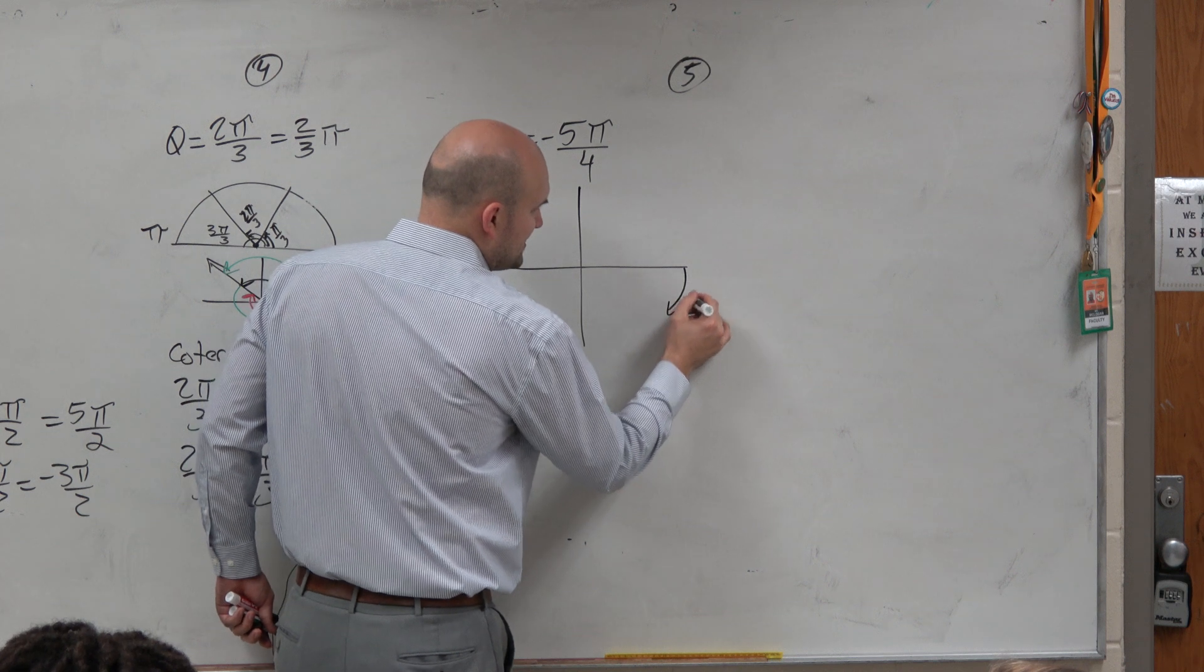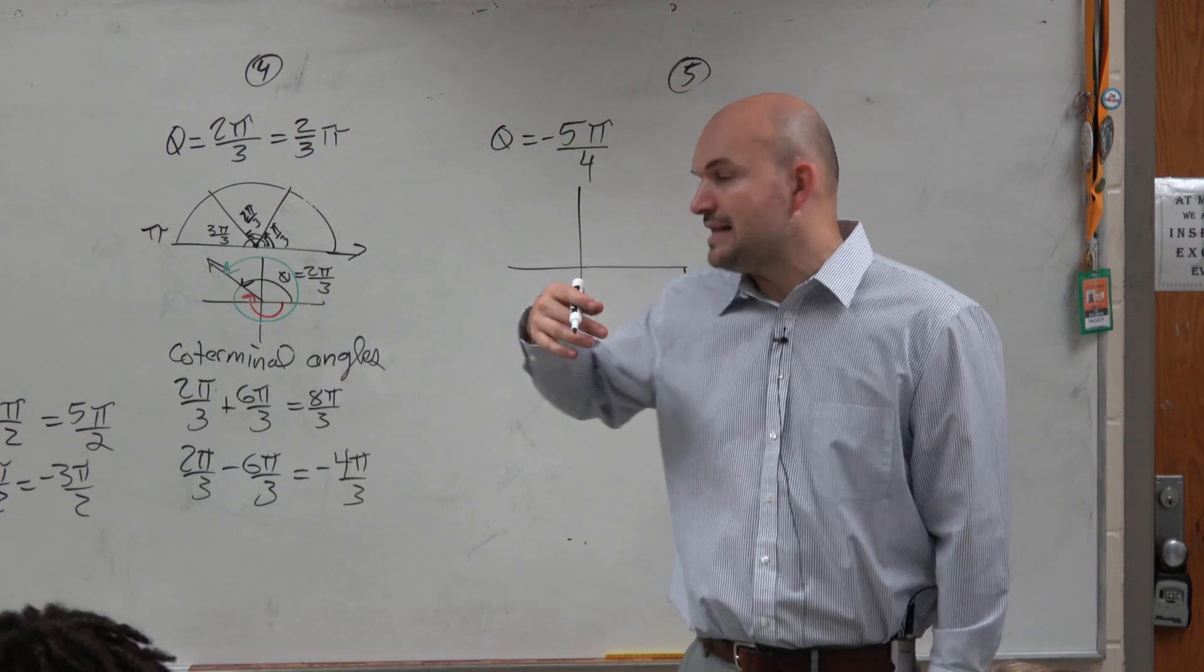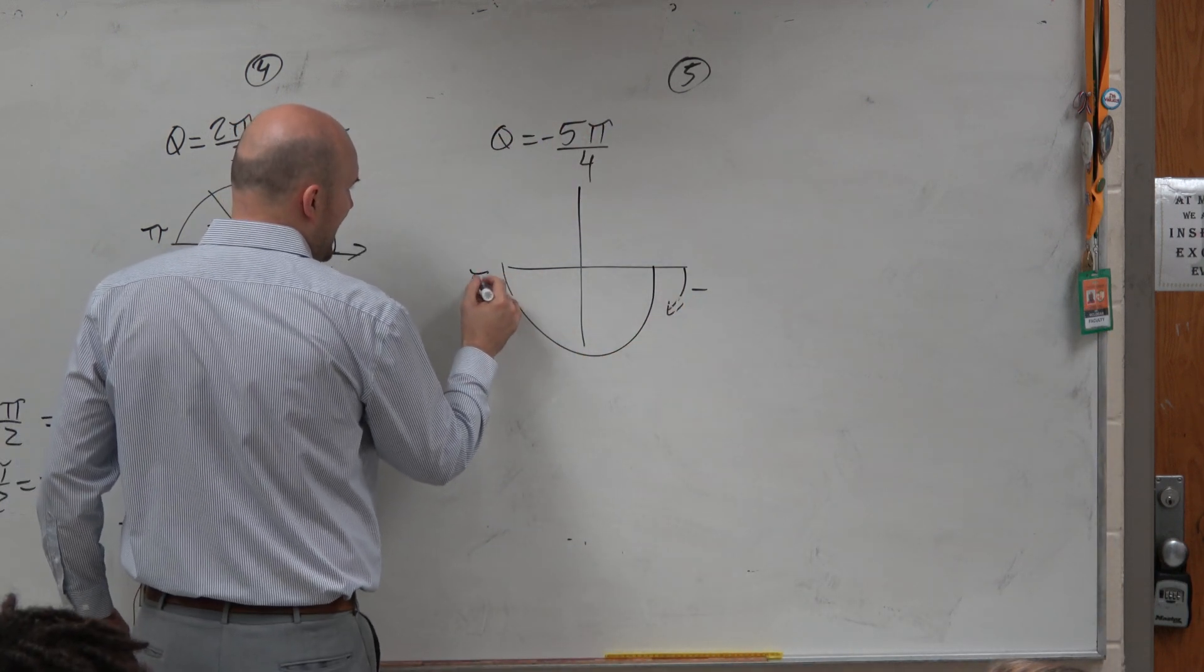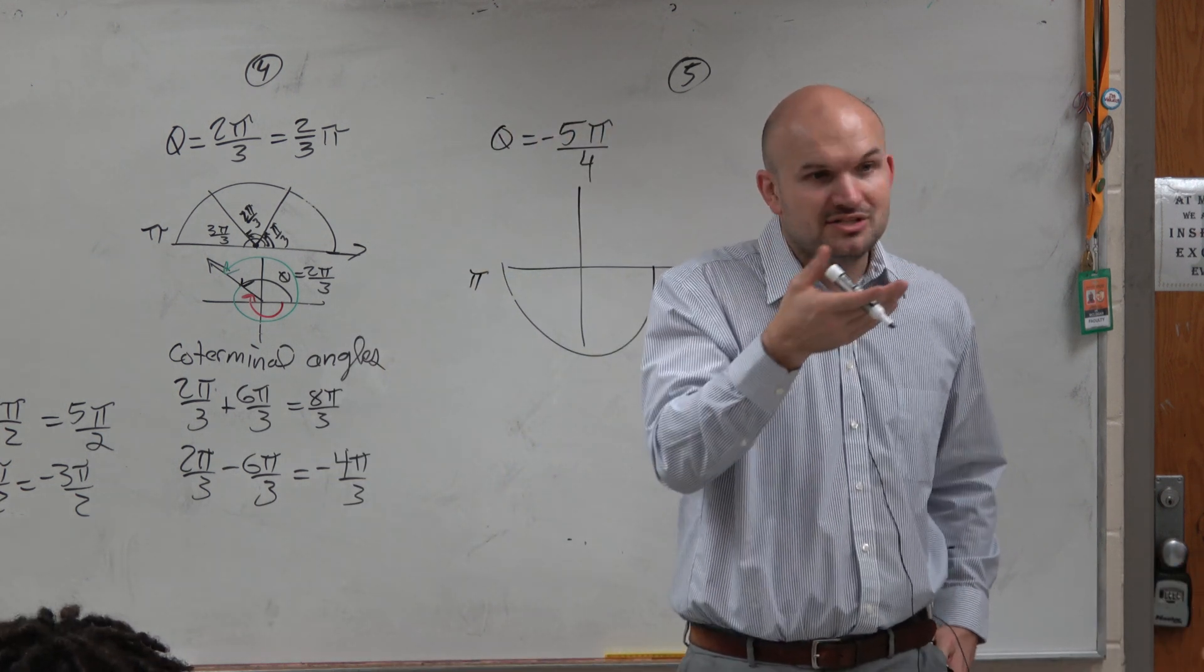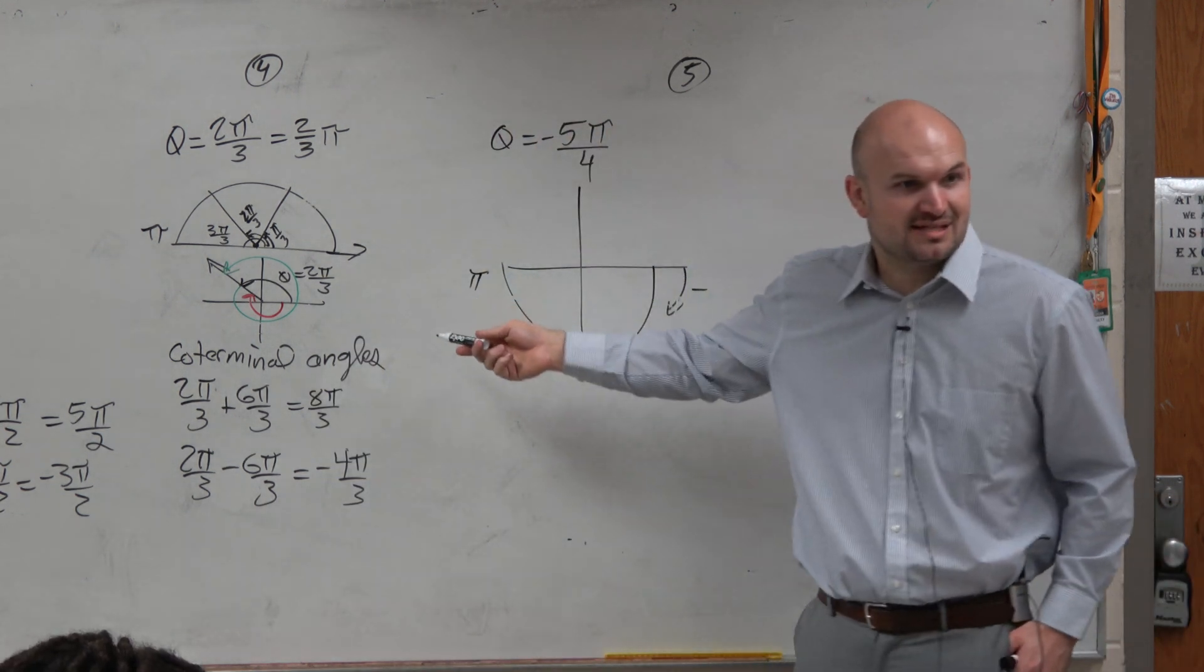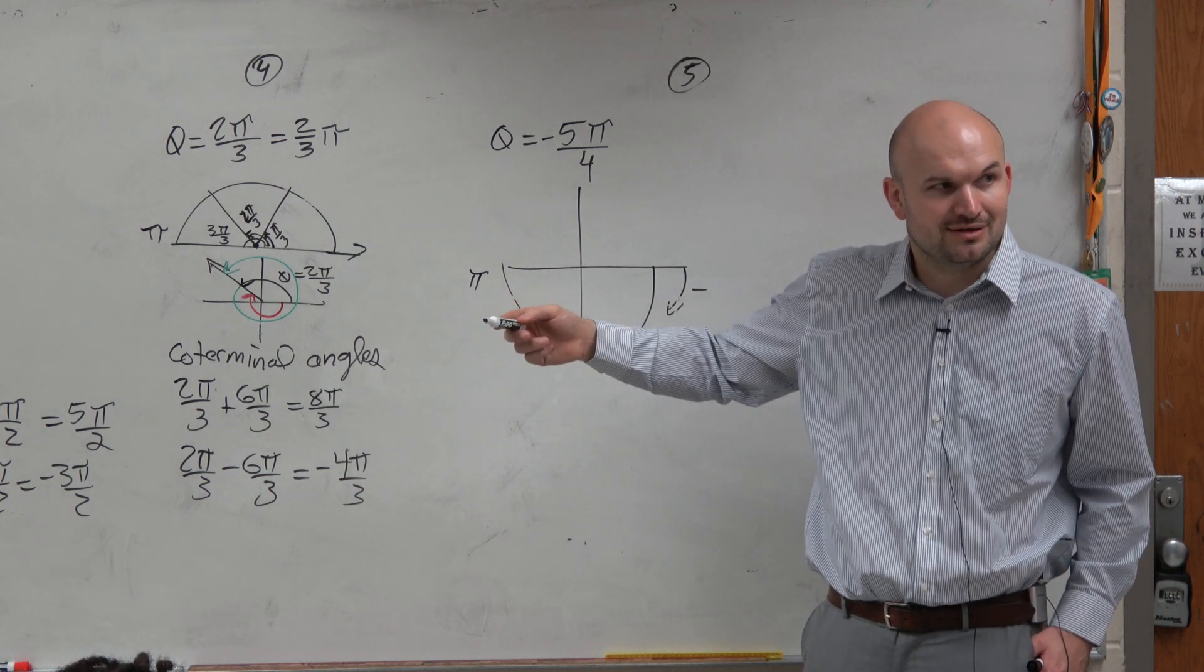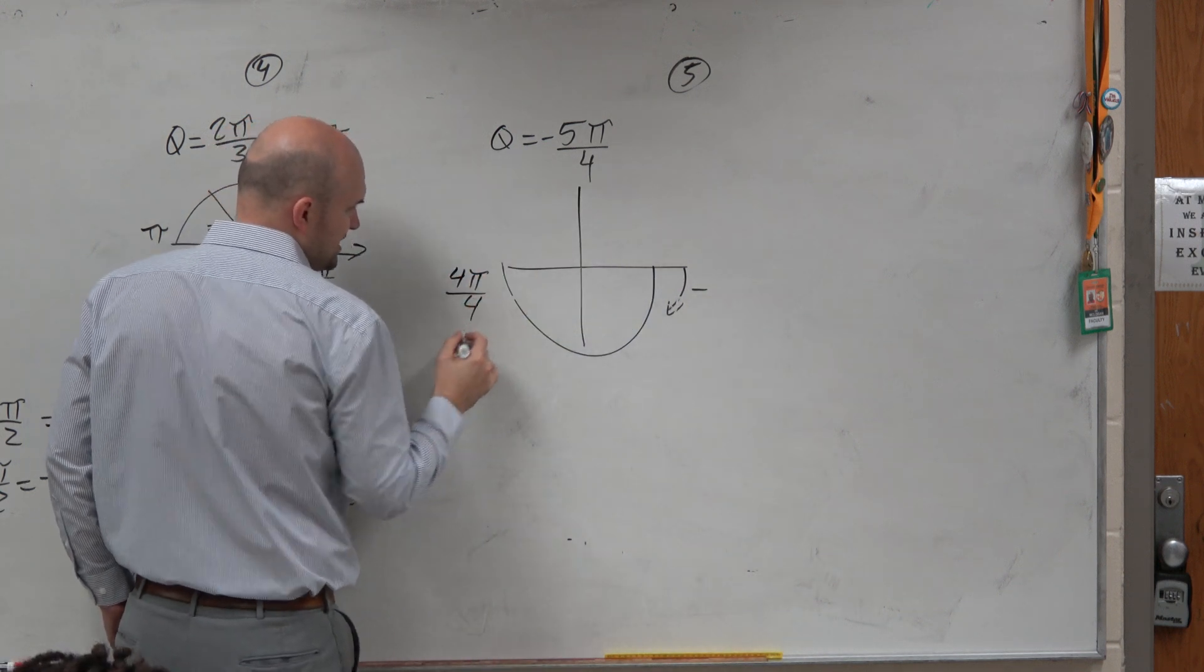We know negatives in this form, in that way, right? So I know I'm going in that direction. Now, from here to here is pi. But also, how many fourths is that? 4 pi over 4, right? So because if here's my denominator, you guys agree, that's like 4 pi over 4.